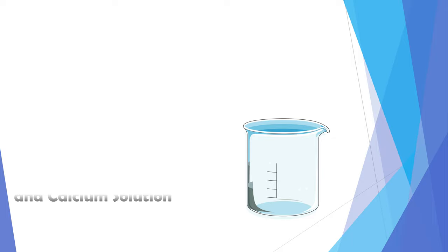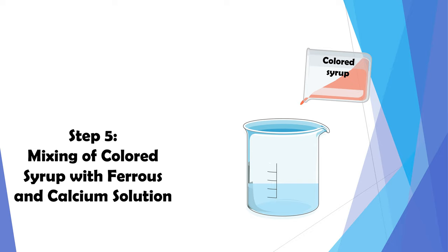Step 5 is the mixing of colored syrup along with ferrous and iron solution. In this orange flower water is used as flavoring agent.